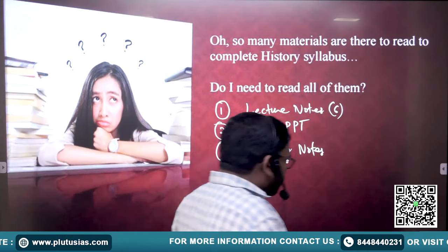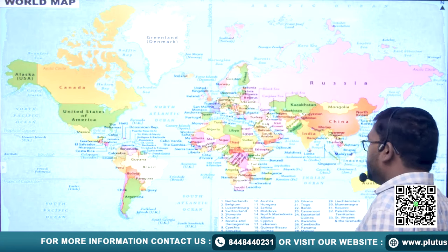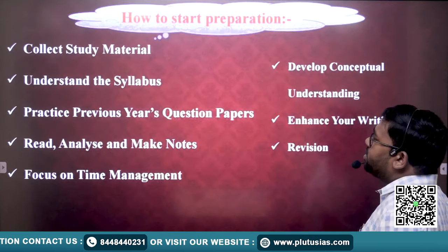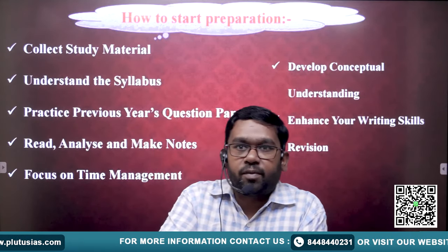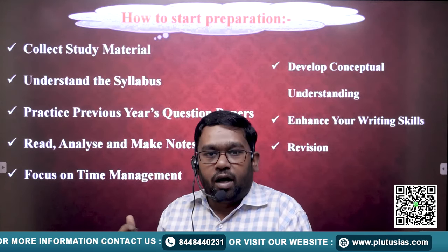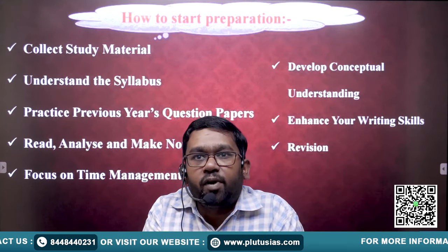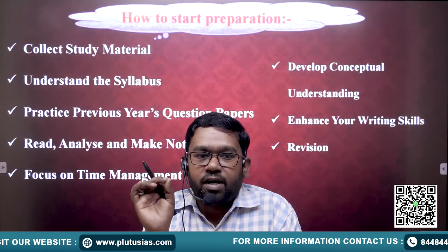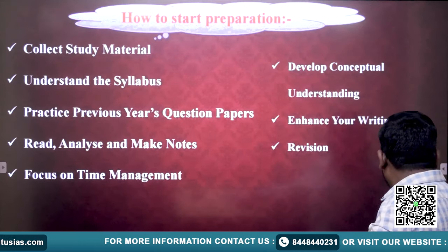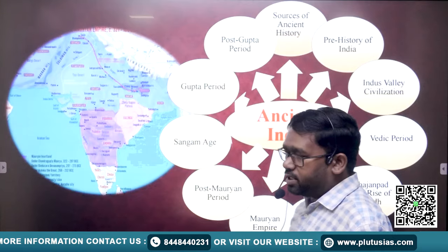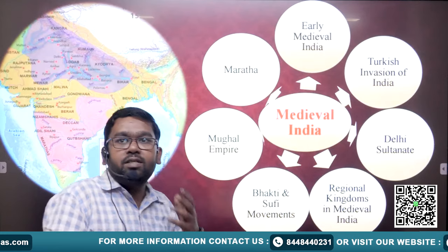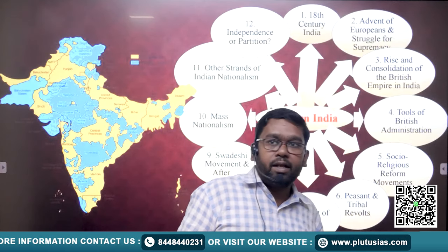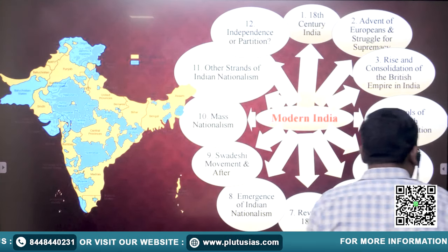Now let me tell you how to start preparation. First, go to the market and collect study materials — if you are doing self-preparation, I've told you which materials are required. Second, understand the syllabus: ancient India has about 10 to 12 chapters, medieval India has seven chapters, modern India has about 12 chapters — understand the syllabus properly.